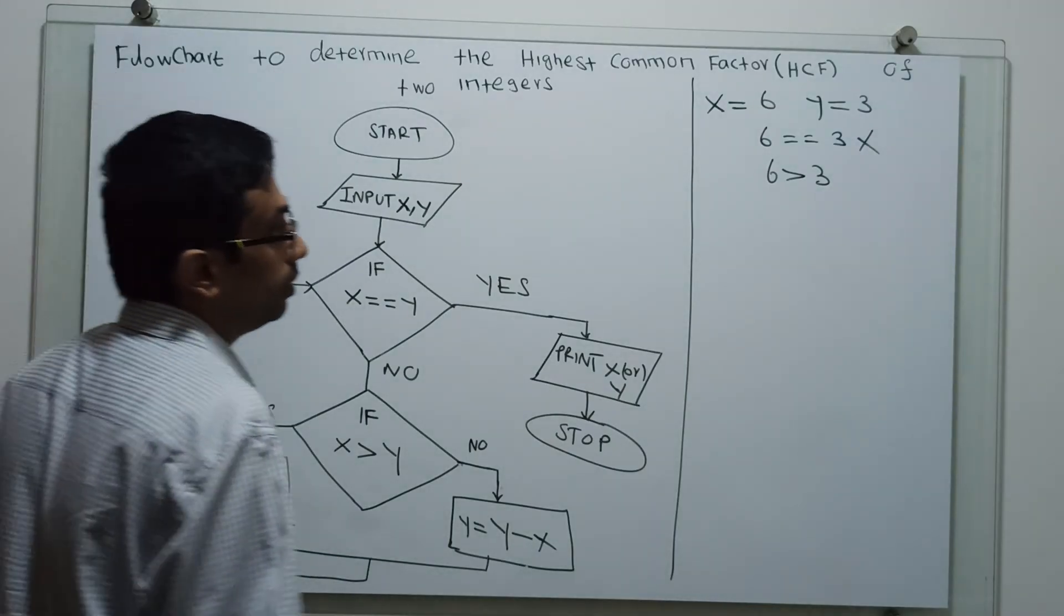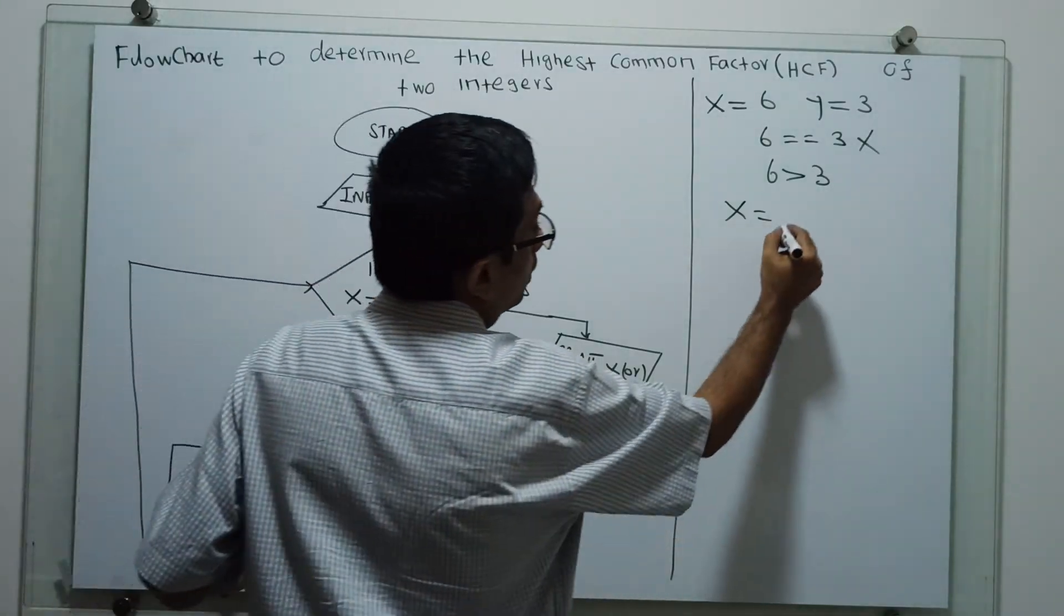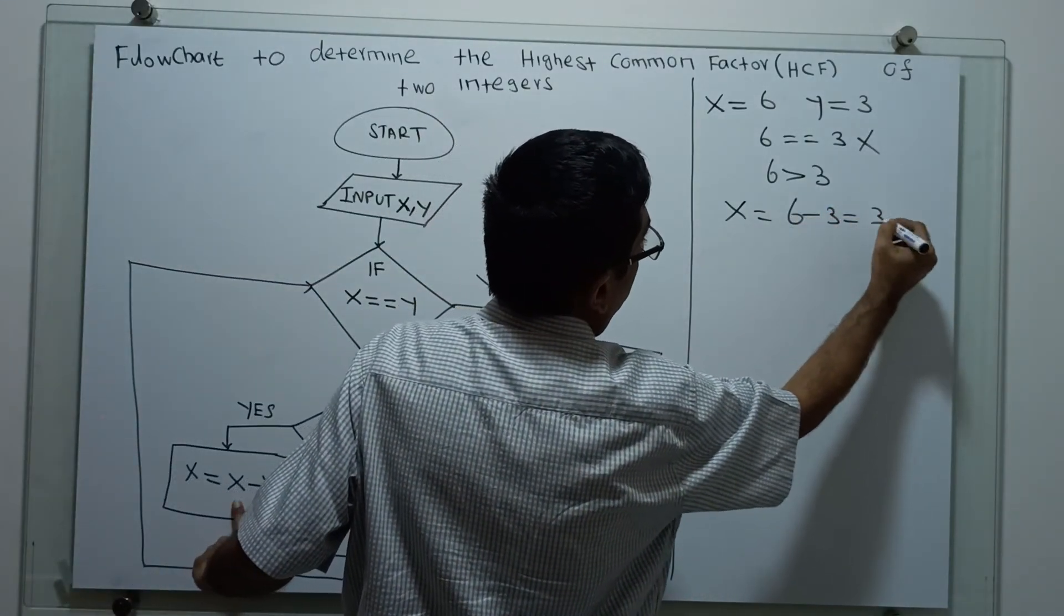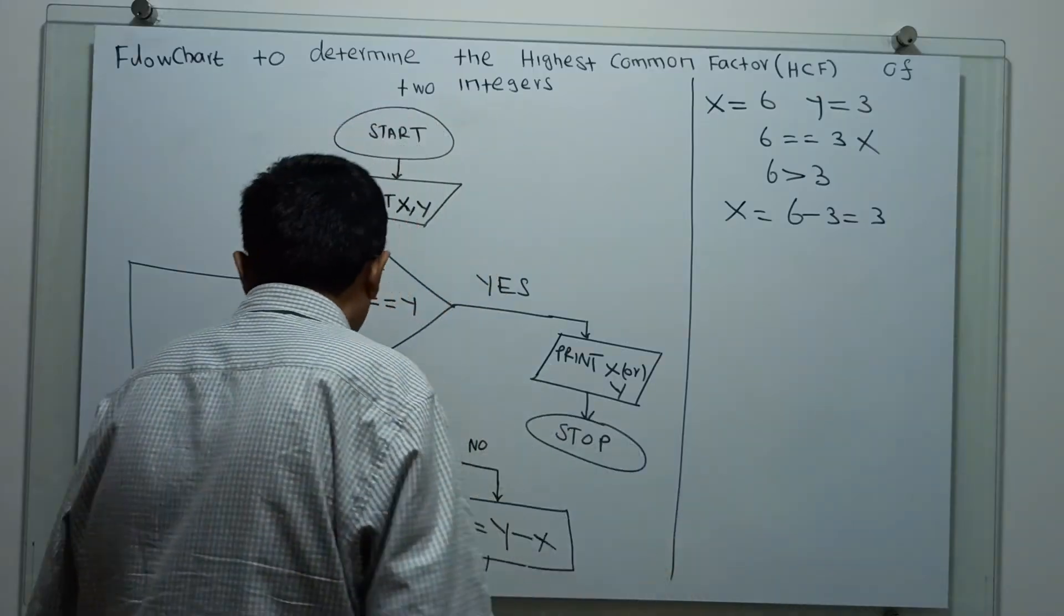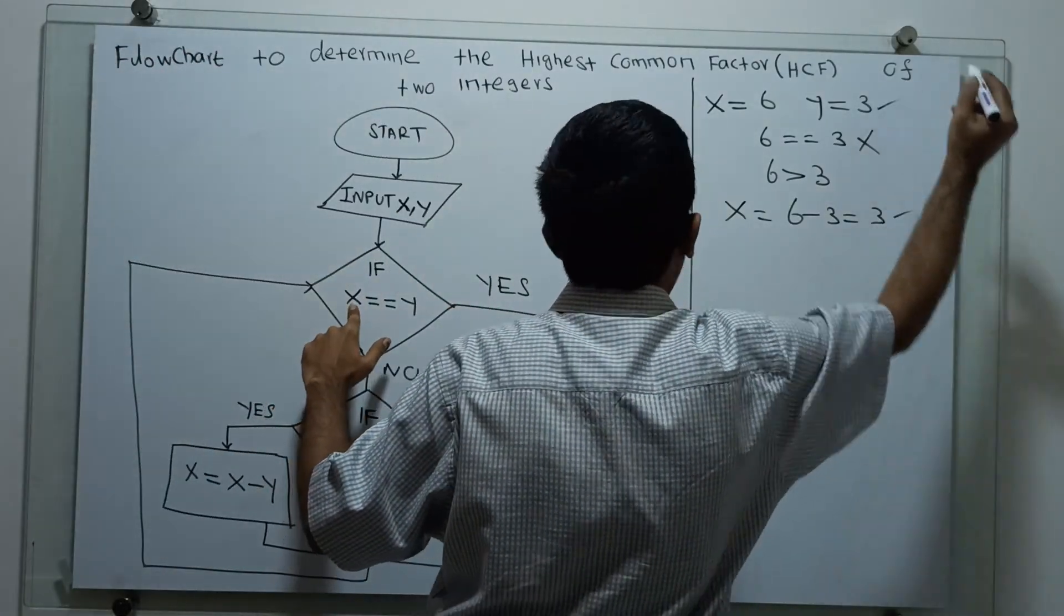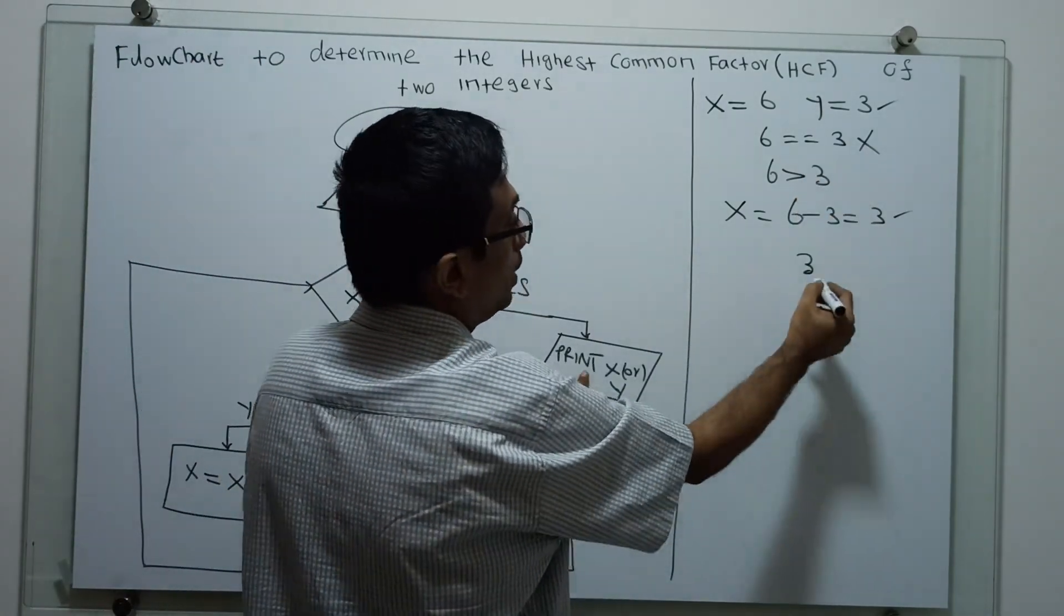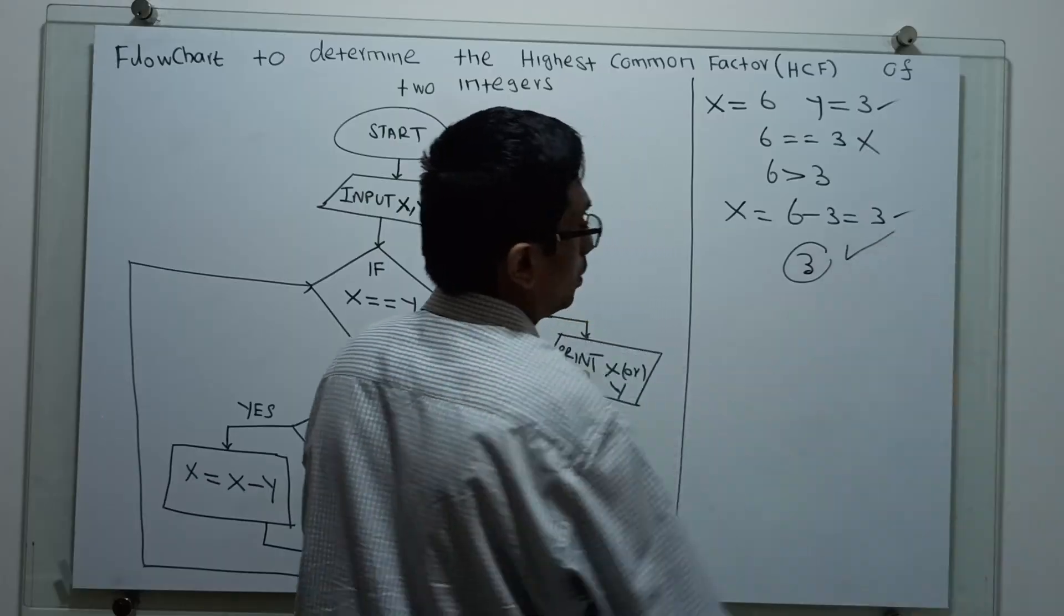In this case, x equal to x minus y. 6 minus 3 which is equal to 3. Now it will pass to the loop and check x equal to y. So x equal to 3, y equal to 3, it will print x or y. So the highest common factor for 6 and 3 is 3. That is correct.